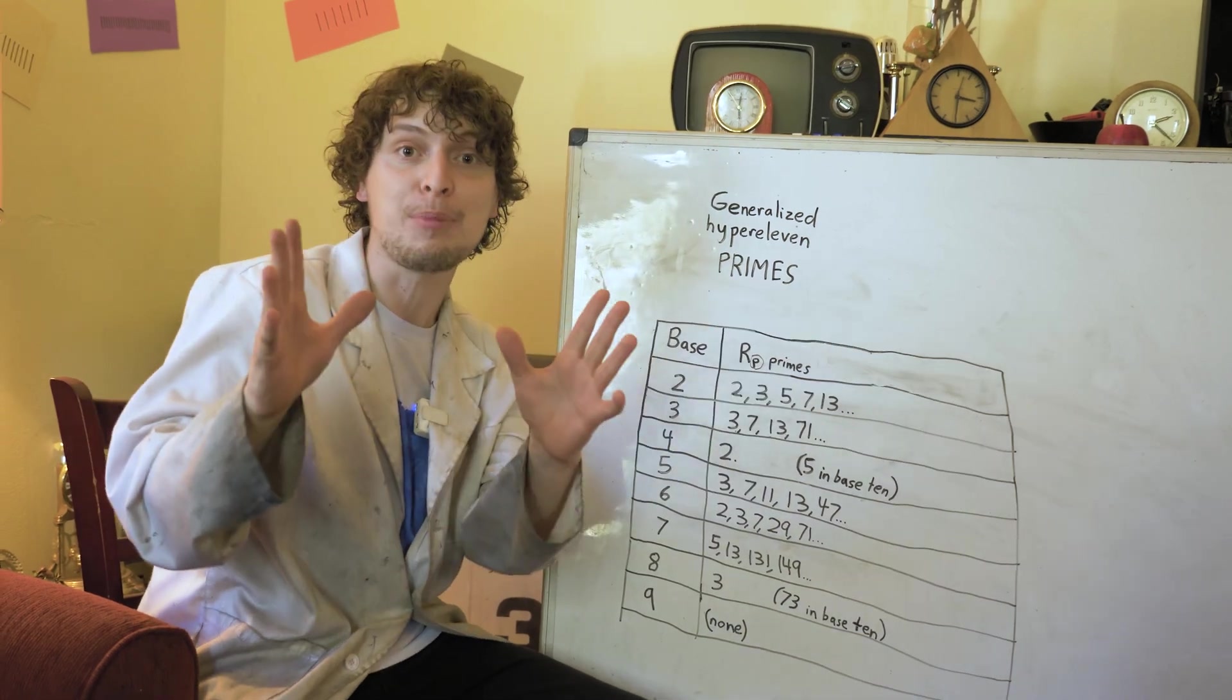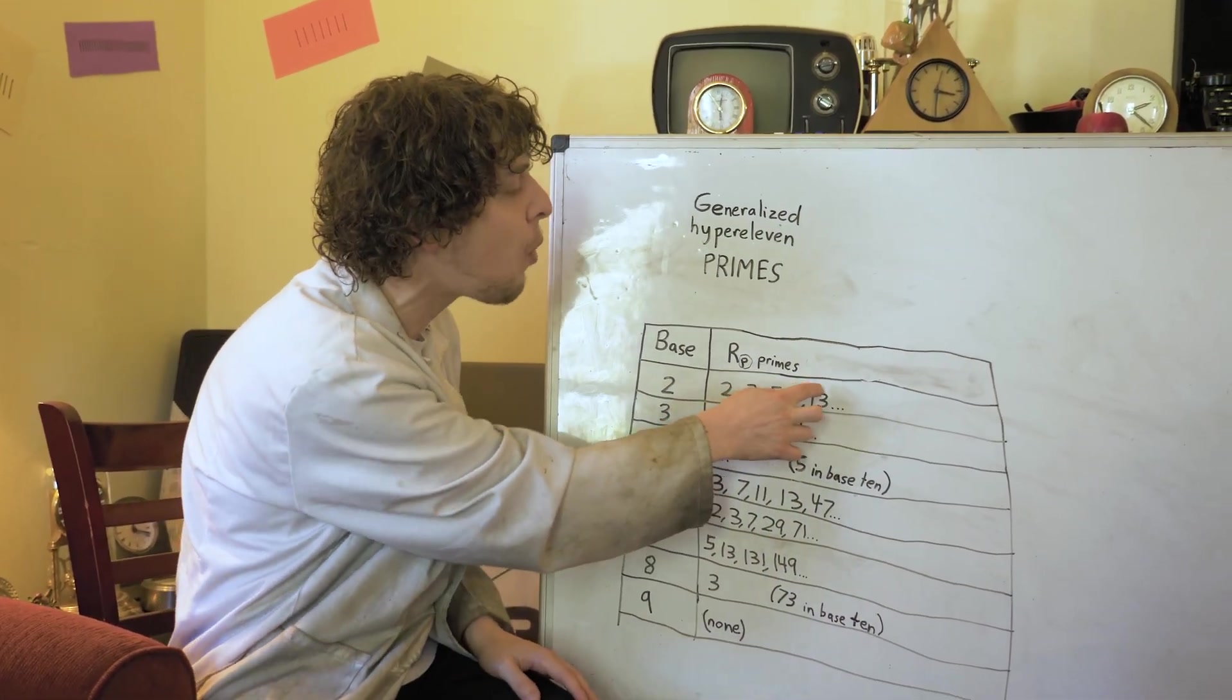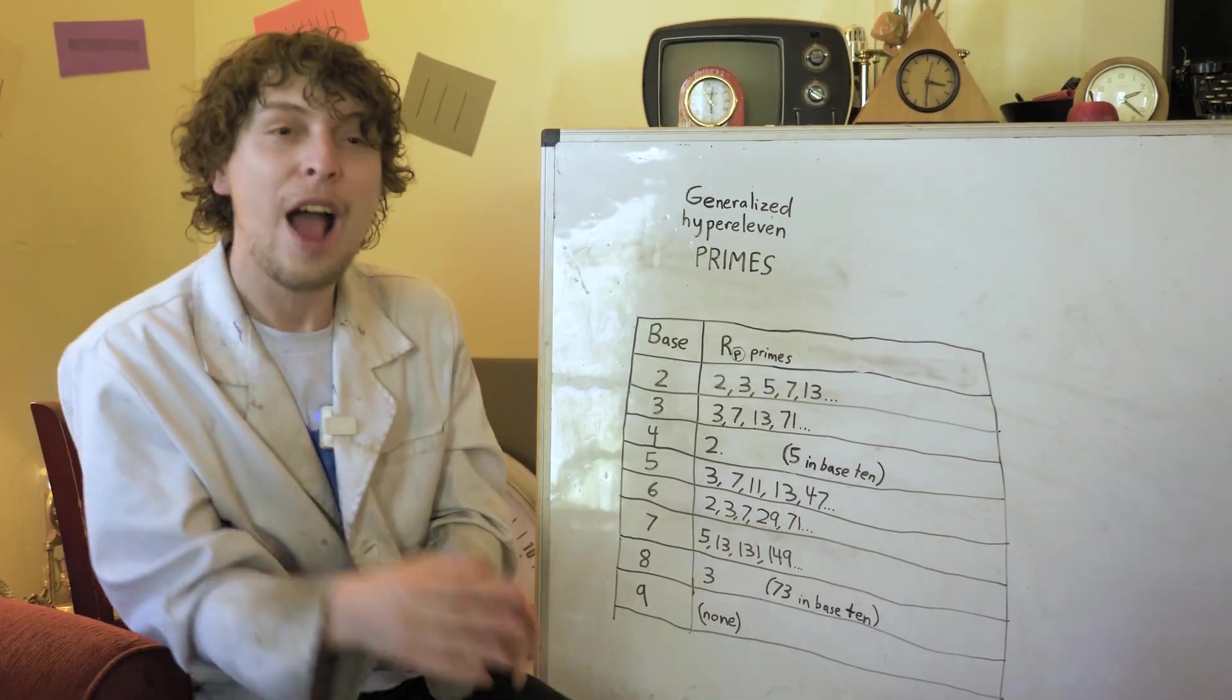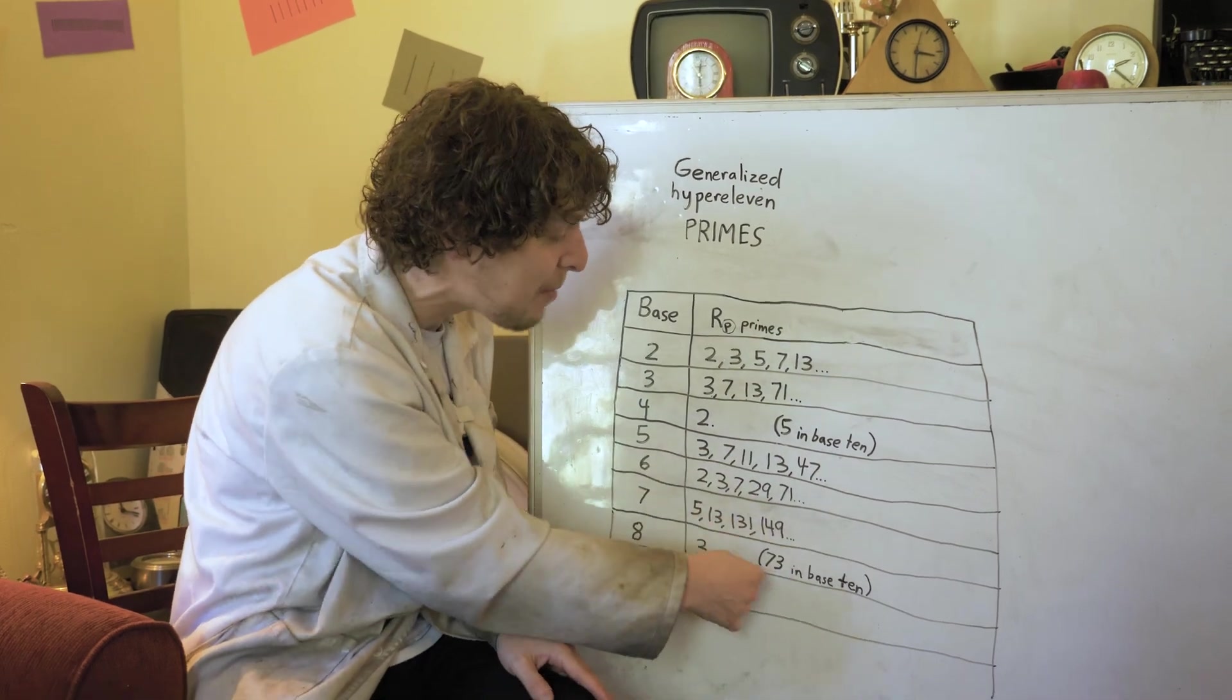So let's check out what numbers are hyper 11 primes in other bases. So here's some of the smallest hyper 11 primes in different bases, written as how many ones we'd write them in in that base.